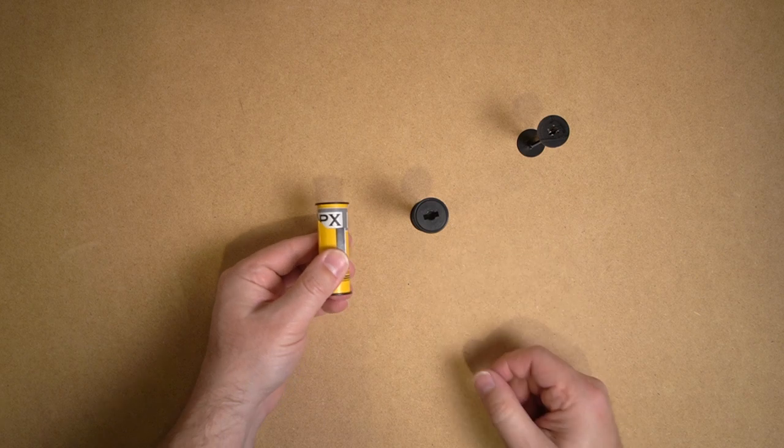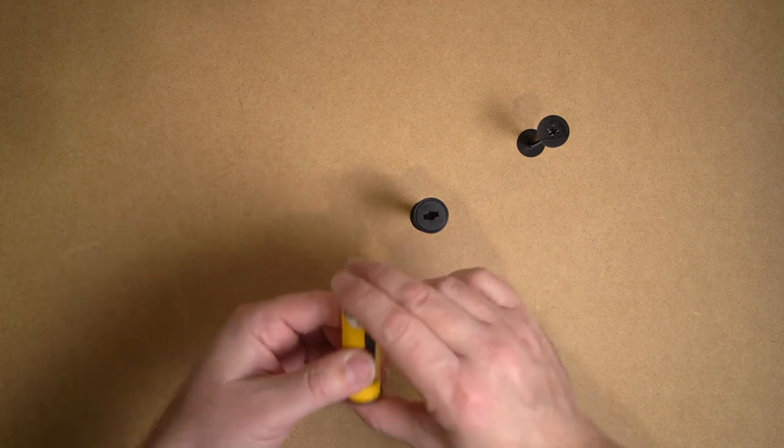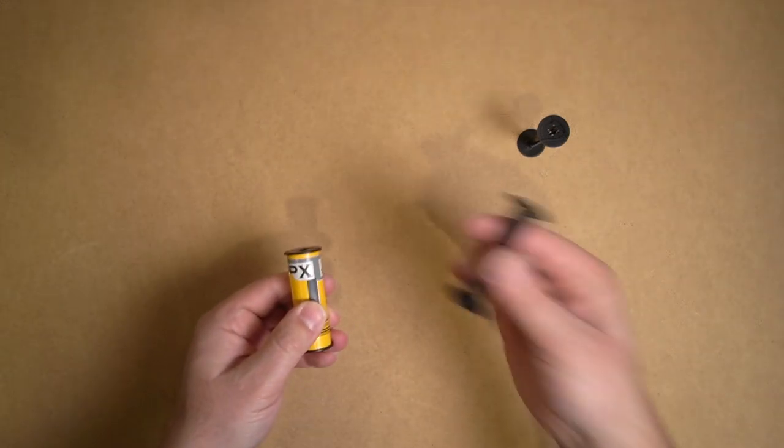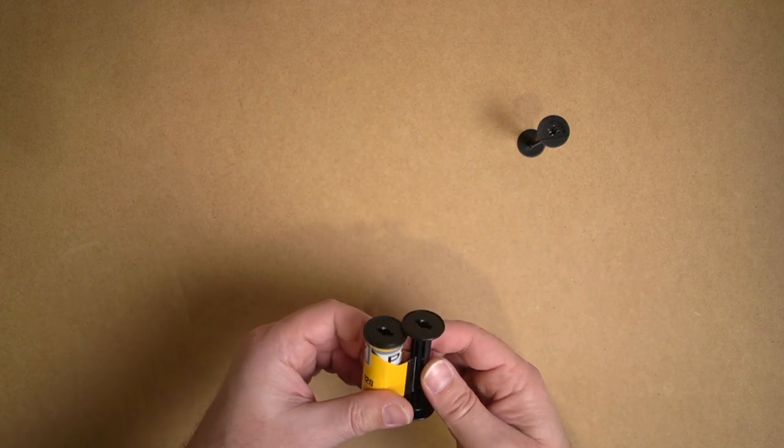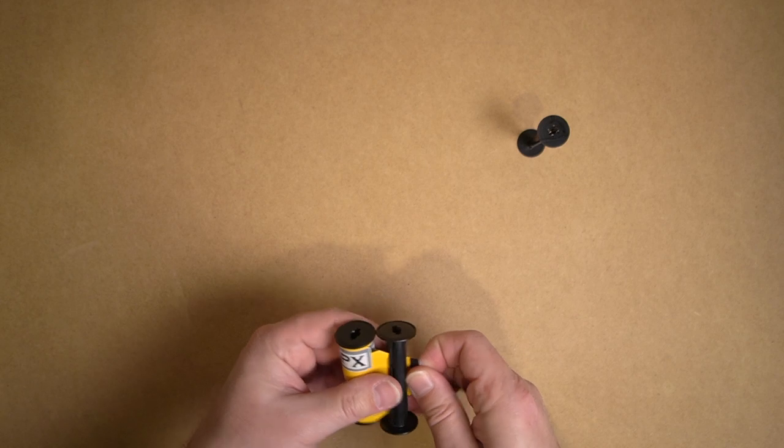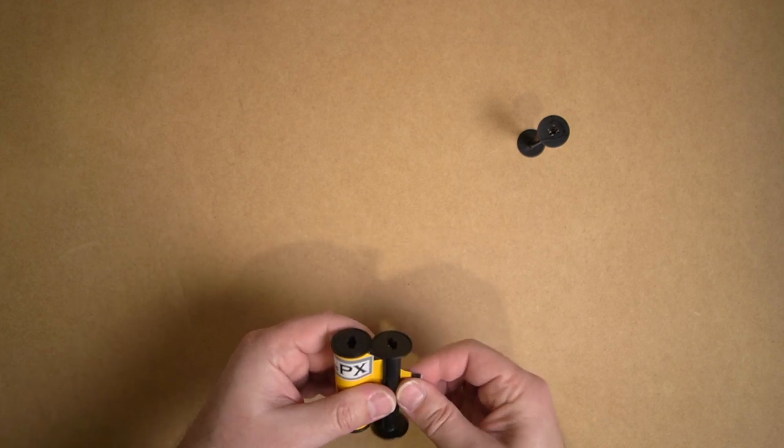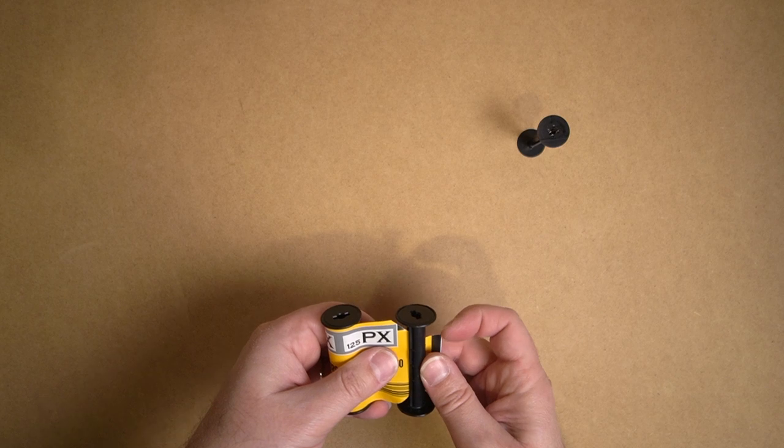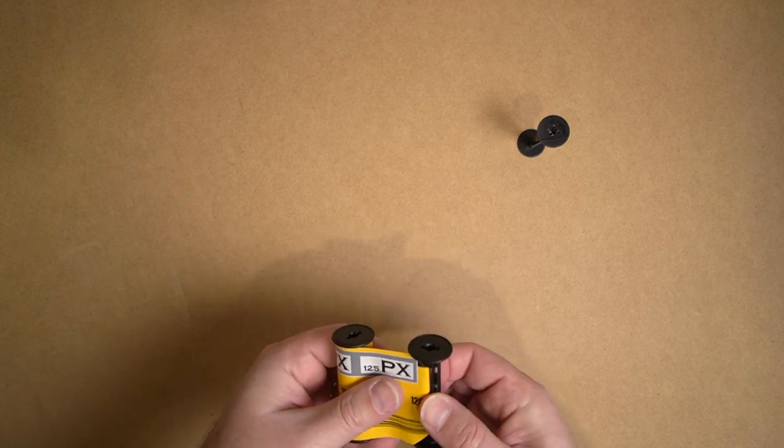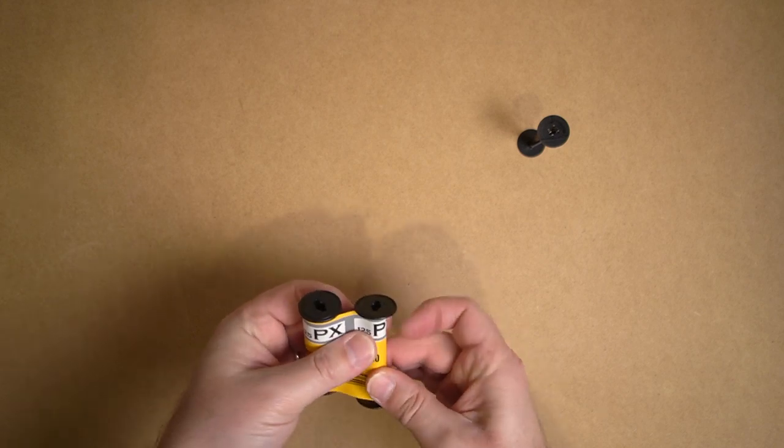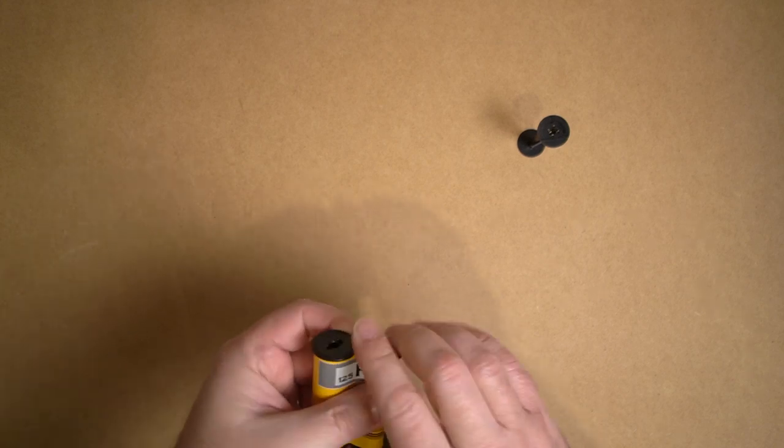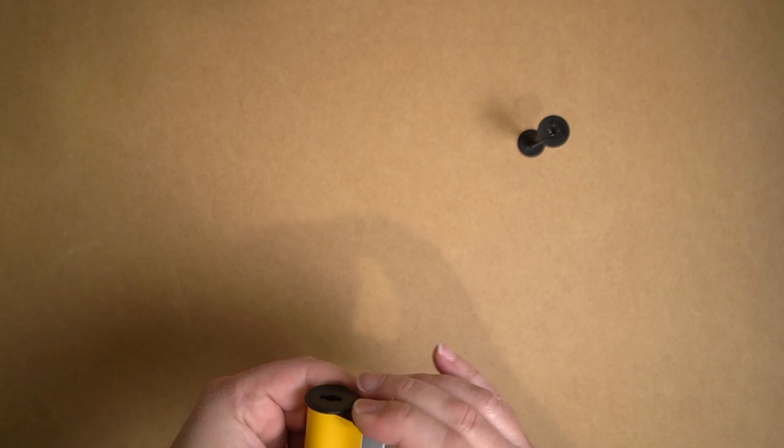Now if we do not have one of these, let's take a look at what we need to do there. Alright, so we are starting back with our original roll, so this is straight out of the package. We've got a spare 120 reel and we're going to put it on that ourselves.